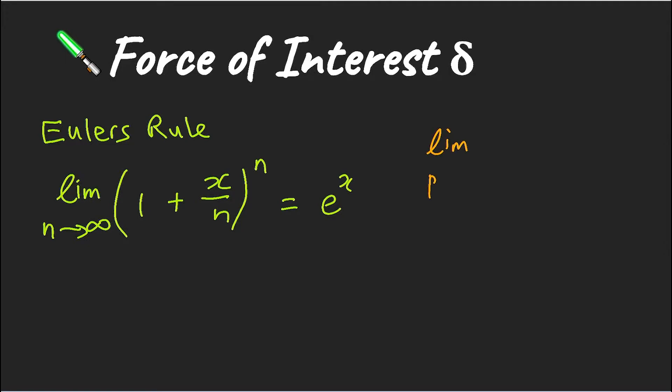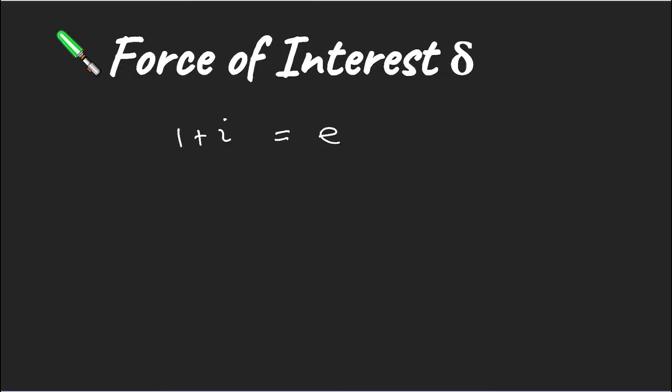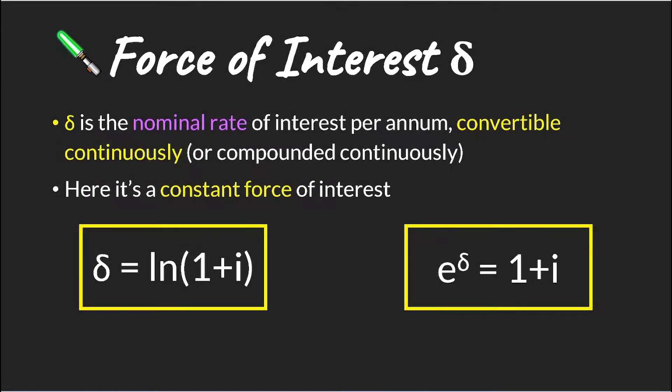We then also want to make use of the fact that we've previously seen the limit of i^(P) as P tends to infinity is equal to our force of interest. By applying these rules, we get to this point. And if we take natural logs of each side, we can express our delta, or our force of interest, in terms of an effective interest rate. And now we have a relationship for our force of interest in terms of an interest rate that we know.